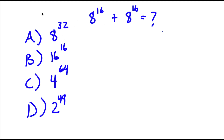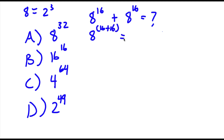Now, 8 is equal to 2 to the power of 3. For answer A, what they did was simply keep the base the same and add the exponents — so 8 to the power of 16 plus 16, and 16 plus 16 is 32, giving 8 to the power of 32. And this is actually wrong — you can't just add exponents like that.